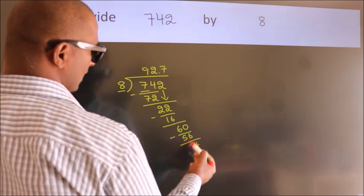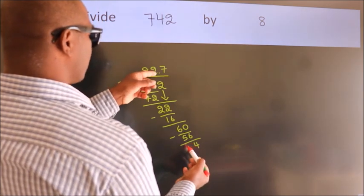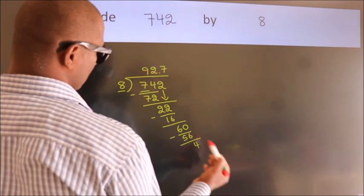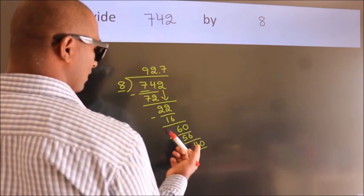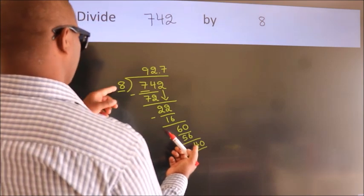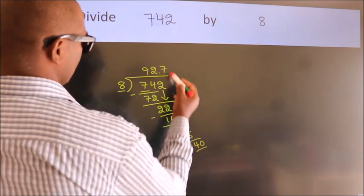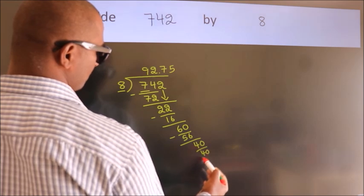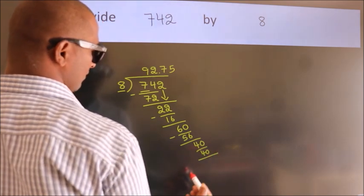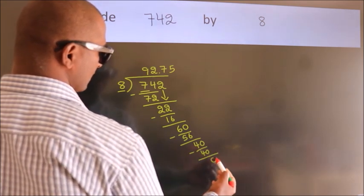After this, we already have the decimal, so directly take 0, so 40. When do we get 40 in the 8 times table? 8 fives, 40. Now we subtract, we get 0.